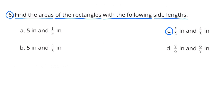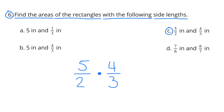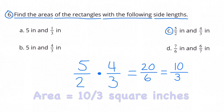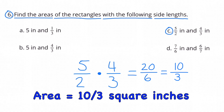C: 5/2 inches and 4/3 inches. 5/2 times 4/3 equals 20/6, which is the same as 10/3. The area is 10/3 square inches.